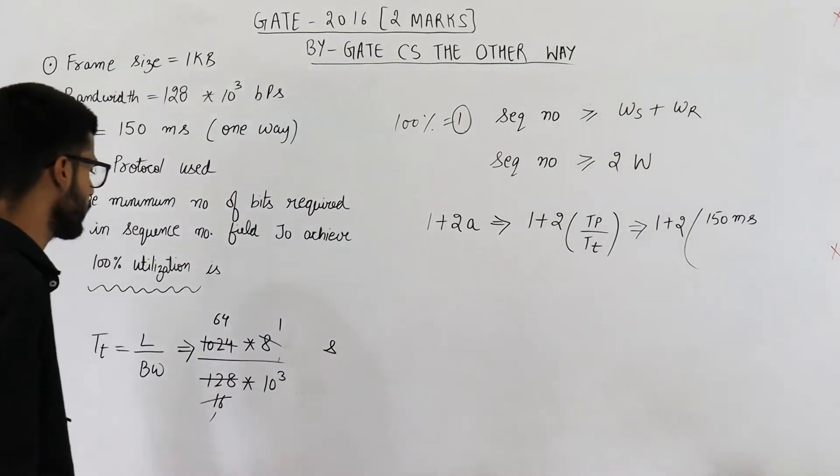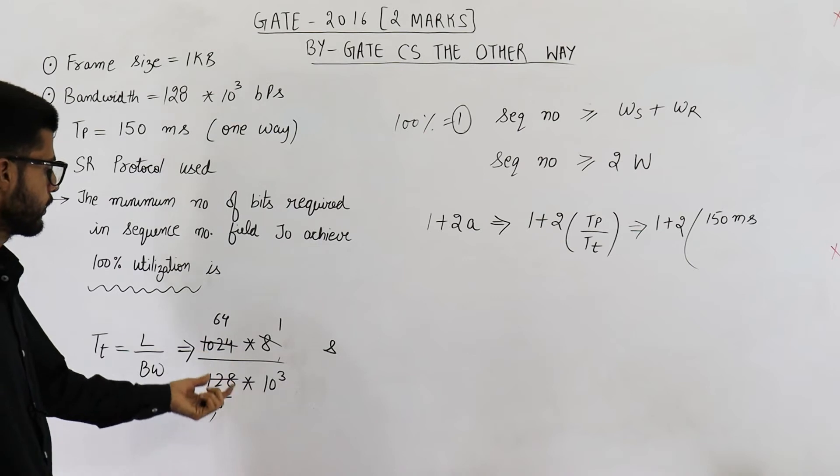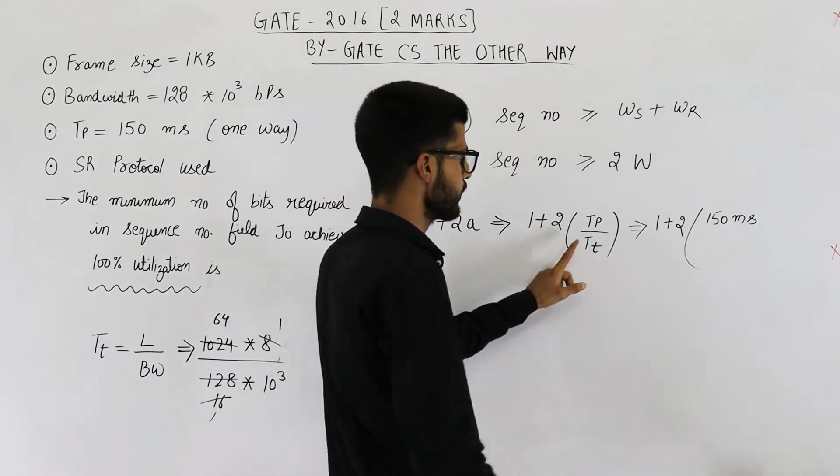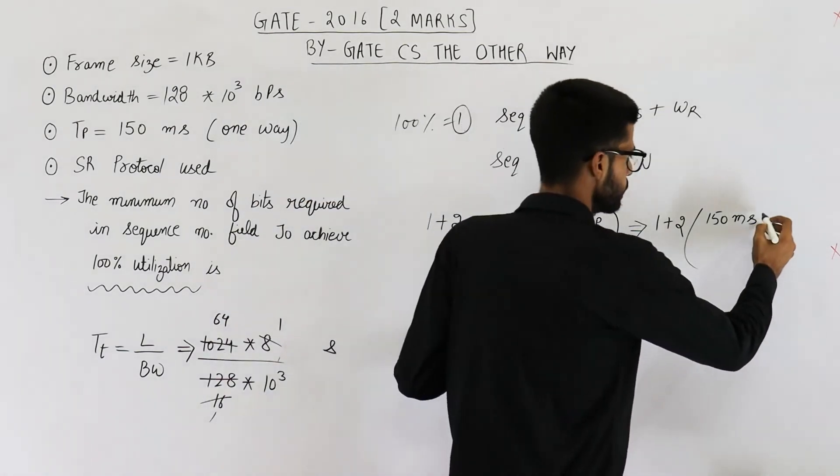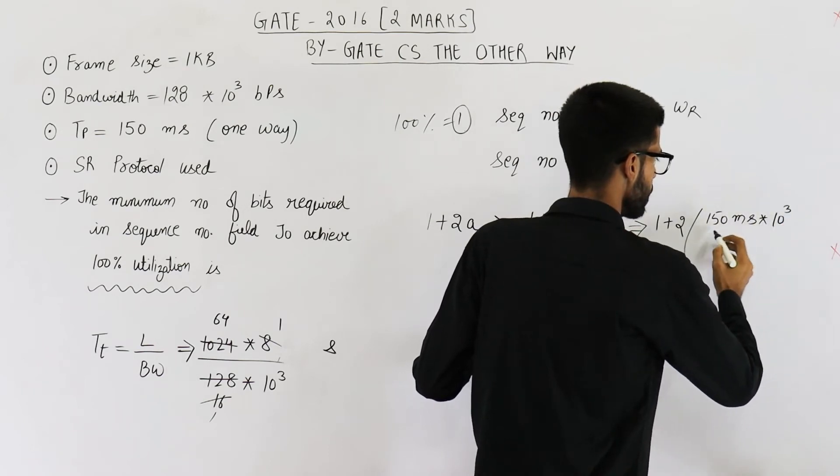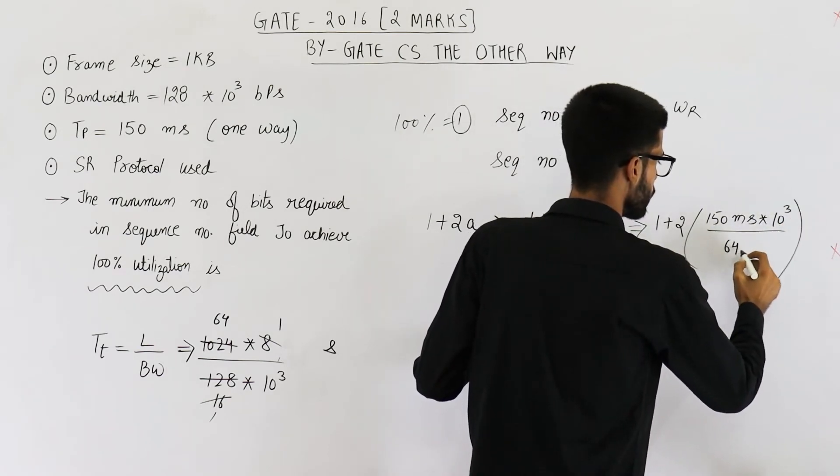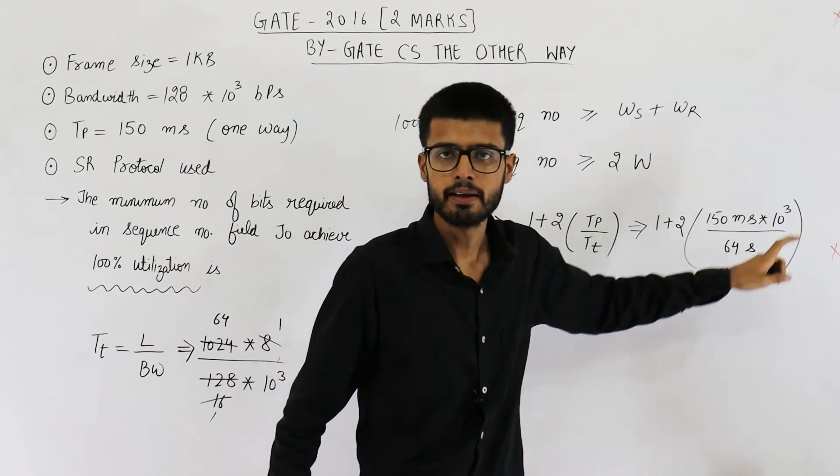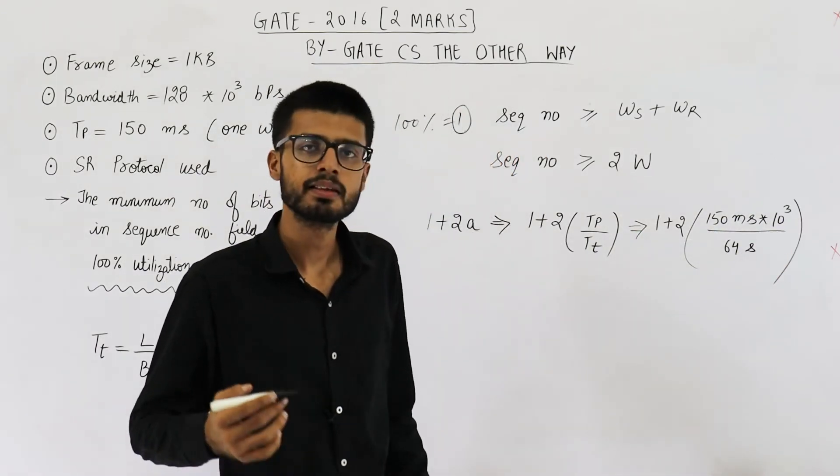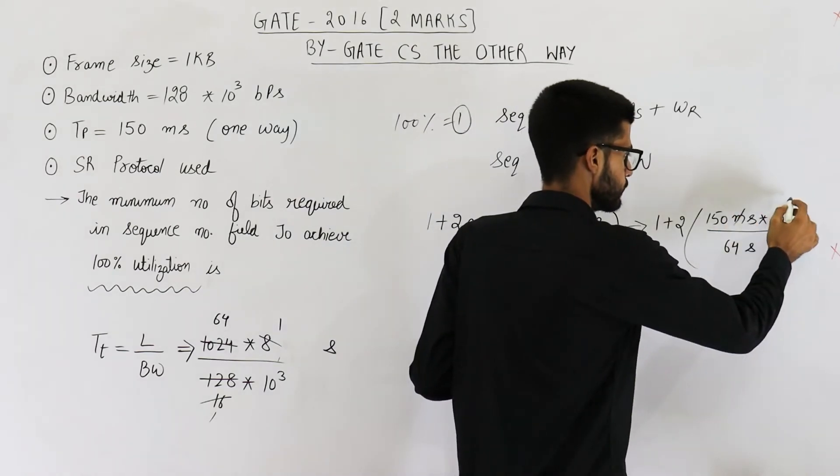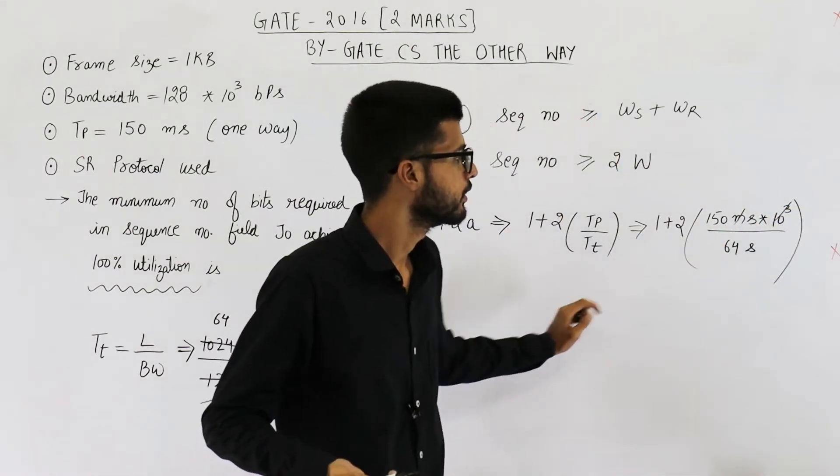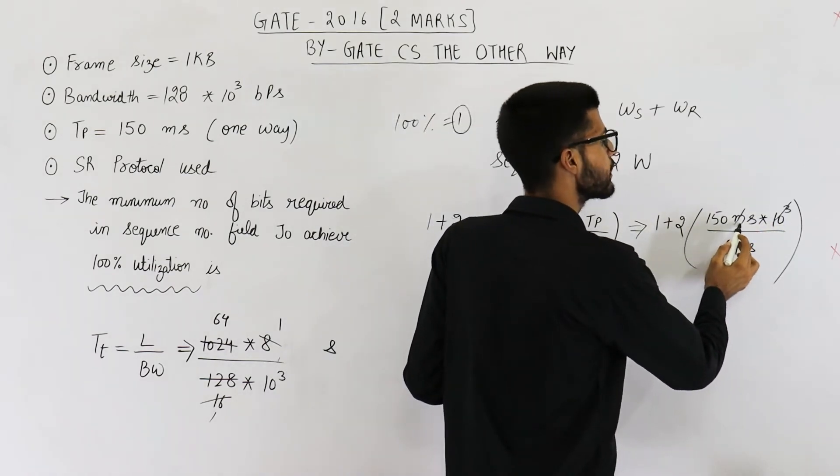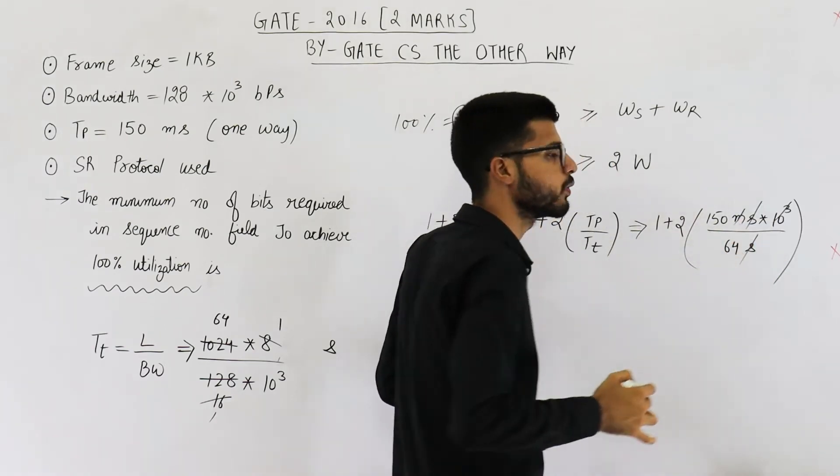So let us just substitute this value. It is 10 cube divided by 64 seconds. See we require the value of 1 by Tt. That will be 10 cube divided by 64 seconds. Now you can see m can be cancelled with 10 cube because value of milli is 10 raised to the power minus 3. That is how I am cancelling it with 10 raised to the power plus 3. This is 10 raised to the power minus 3 seconds. And second and second will also get cancelled.